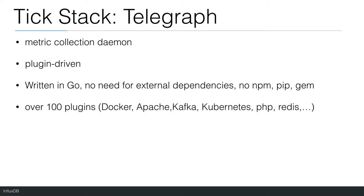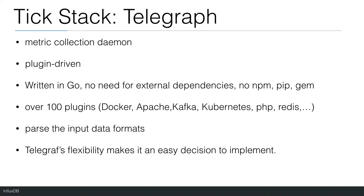Some examples of these plugins are the Docker plugin, Apache, Kafka, Kubernetes, PHP, Redis, and so on. You can even use Telegraf to parse the input data formats into metrics. The Telegraf architecture supports your workflows and does not force you to change your workflows to work with the technology.